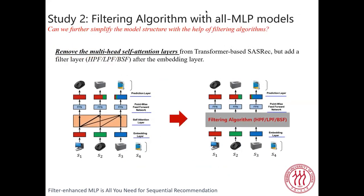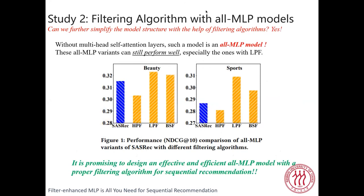Based on these findings, we consider whether we can further simplify the model structure with the help of filtering algorithms. We consider removing the multi-head self-attention layers from the transformer-based SASRec model and adding a filter layer after the embedding layer. In this way, without the multi-head self-attention layers, such a model is an all-MLP model. As shown in the figure, these all-MLP variations can still perform well, even better than SASRec — especially those with low-pass frequency filtering, which can outperform SASRec by a large margin. This indicates it is promising to design an effective all-MLP model with proper filtering algorithms for sequential recommendation.